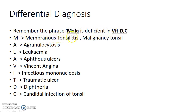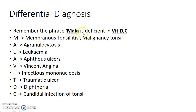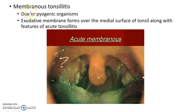M stands for membranous tonsillitis and malignancy of tonsil. A stands for agranulocytosis. L stands for leukemia. Another A stands for aphthous ulcers. V stands for Vincent angina. I stands for infectious mononucleosis. T stands for traumatic ulcer. D stands for diphtheria. And C stands for candidal infection of tonsil. So remember the mnemonic: MALA IS DEFICIENT IN VITAMIN DC.